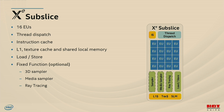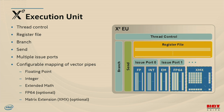Let's zoom in on the execution units. XE execution units include a thread controller, register file, branch and send units, and vector SIMD processing pipes supporting floating point, integer, and extended math. XE also adds a matrix processing pipeline — a 2D array of ALUs rather than 1D — with support for deep learning data types including float16, bfloat16, and int8. The execution unit supports co-issue of instructions to branch, send, and vector pipes, though the specific arithmetic types combined on a single issue port depend on the microarchitectural variant.